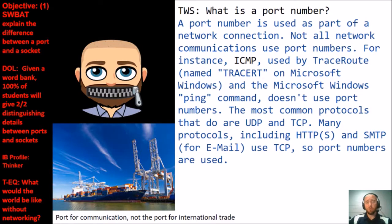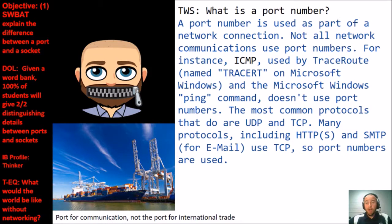A port number is used as part of a network connection, though not all network connections use port numbers. For instance, ICMP, used by TraceRoute and the Windows ping command, do not use port numbers. The most common protocols that do use port numbers are UDP and TCP. Many protocols including HTTP, HTTPS, and SMTP — used for email — use TCP. So almost any time TCP is being used, we're talking about ports.